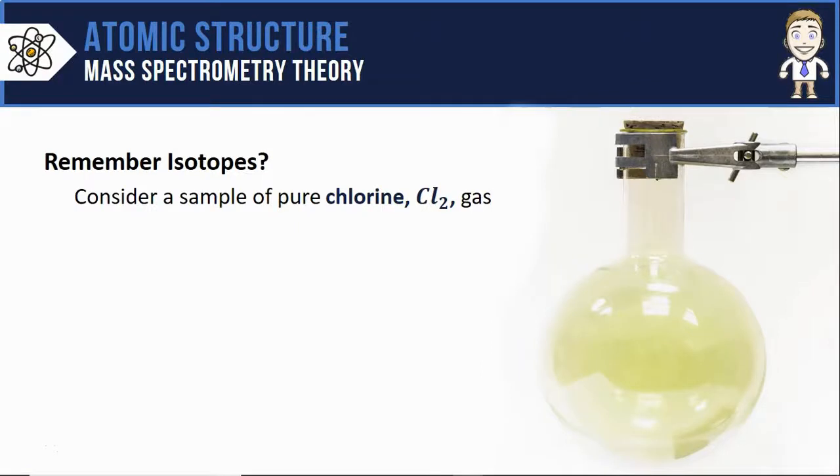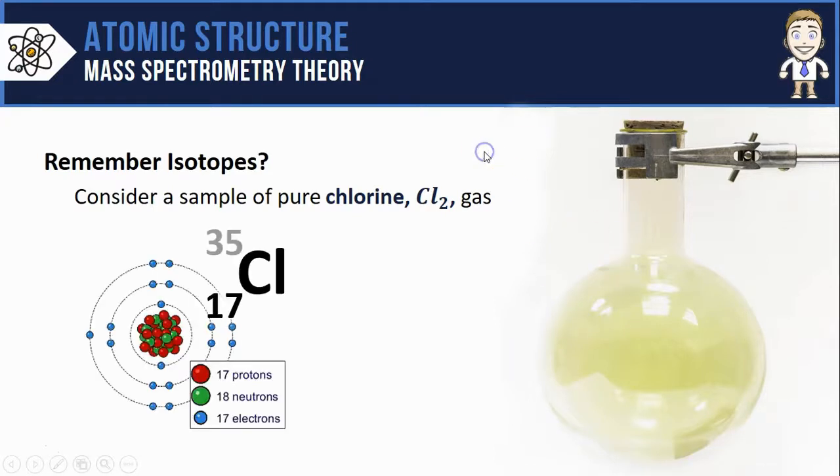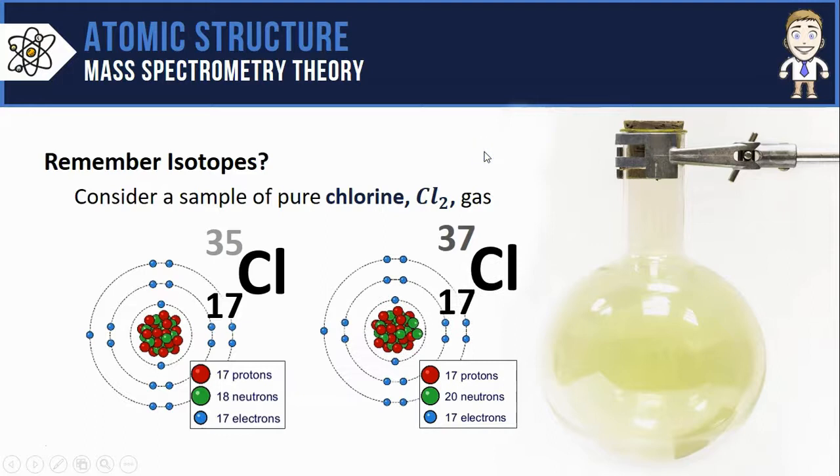Remember from the last video that atoms of the same element come in different forms called isotopes. Like the chlorine atoms in the sample of chlorine gas, some of those chlorine atoms have a mass of 35, others have a mass of 37. Those are the two naturally occurring isotopes of chlorine.